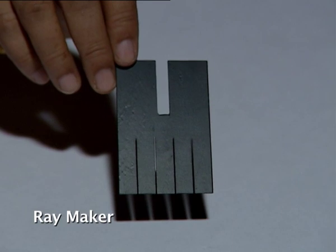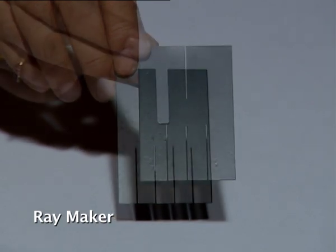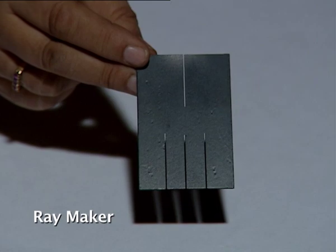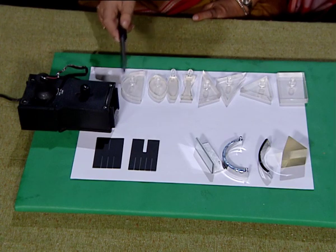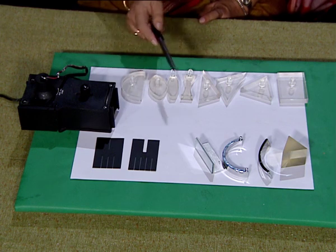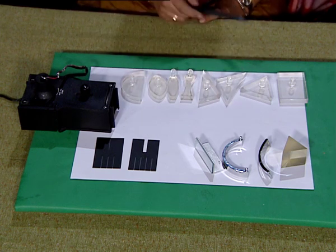When you place this ray maker and the light box assembly on any flat sheet, because the light that is grazing along the surface of the paper is going to light up and they will show up as rays. These act as ray maker and we can study using this apparatus what will happen to the rays when they encounter other surfaces that are placed here.